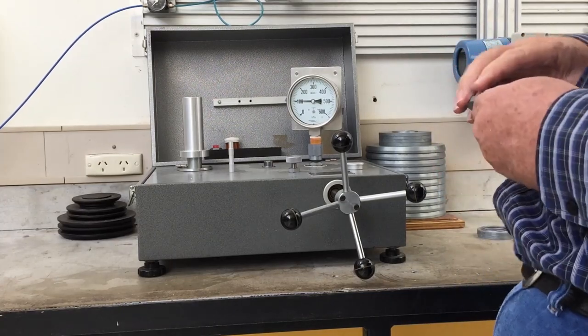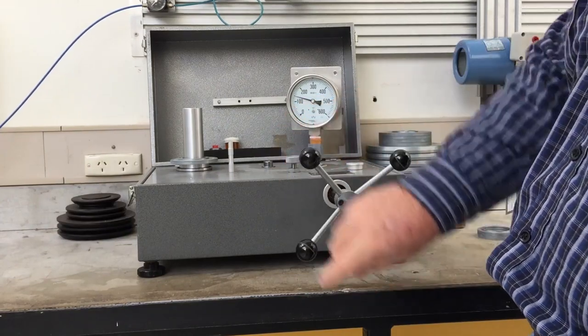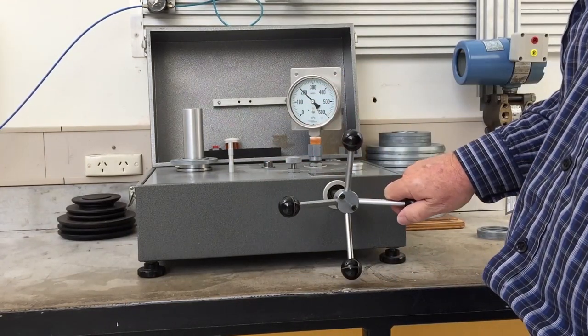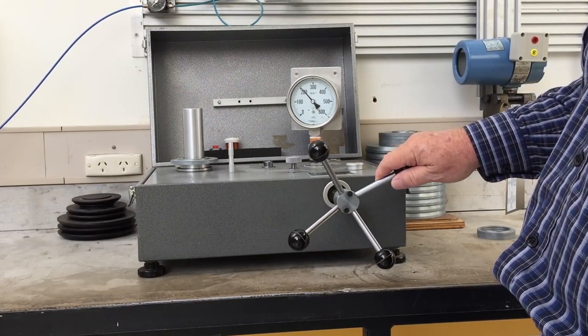Add the next weight to take the next reading. In this case, 100 kPa is added to make a total of 200 kPa. Increase the pressure by turning the handle and record the pressure on the gauge when the piston pops up.